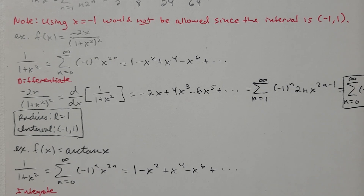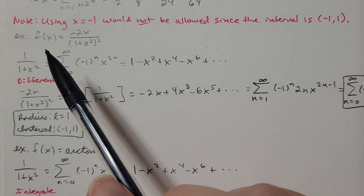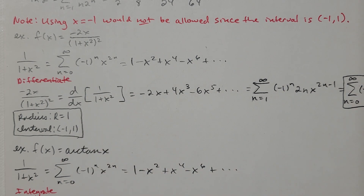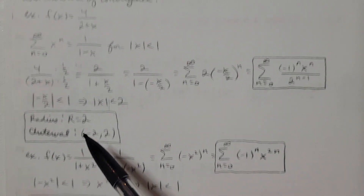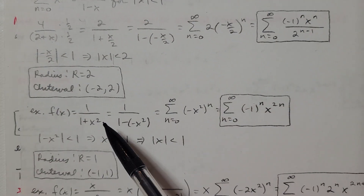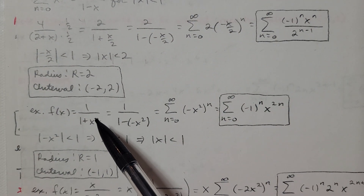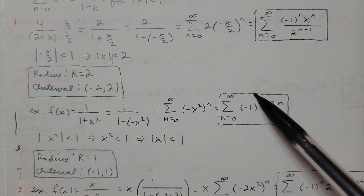We're in section 11.9 and we have the function f(x) = -2x divided by (1 + x²)². We want to find a power series representation for this. Earlier, as the second example in the 11.9 notes, we found a power series expansion for 1 divided by 1 + x².